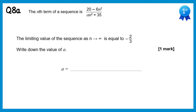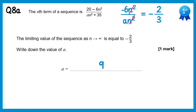For question 8 we're told the limiting value of the sequence. To find the limiting value we lose the 20 and plus 35, leaving negative 6n squared over an squared. Cancelling the n squareds, this needs to equal negative 2 thirds, so the value of a must be 9, since negative 6 over 9 is the same as negative 2 thirds.